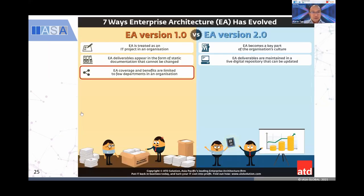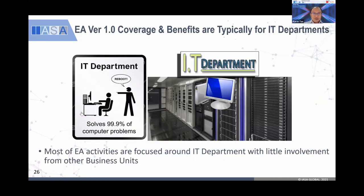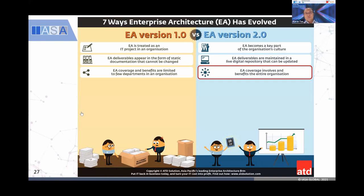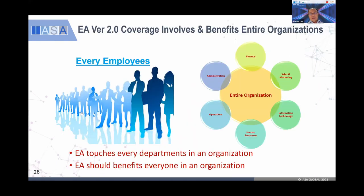The third difference is on coverage. The coverage in traditional EA typically only focuses on the IT department — it's very difficult for the IT department to go outside, because they're only comfortable with technology. EA 1.0 typically focuses a lot on the IT department. Whereas in EA 2.0, everybody is involved — every employee across the entire organization: sales, marketing, finance, operations, human resources, admin, strategy, and IT itself. I've come across implementing enterprise architecture for a hospital where even the nurses got involved in defining the business architecture, and the pharmacy team also got involved — not only the IT team.